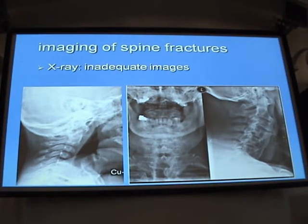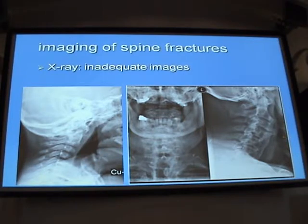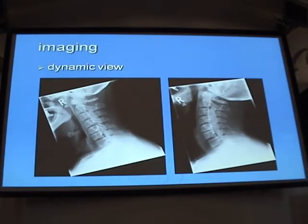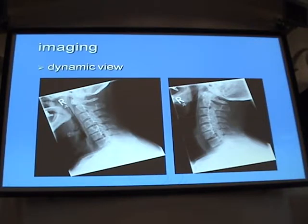If we need to control the dens position, we use the open-mouth X-ray. If fractures of the bone have been excluded, we perform dynamic views in anteflexion and retroflexion to control the distance between the vertebral bodies and exclude disc and ligament injuries.